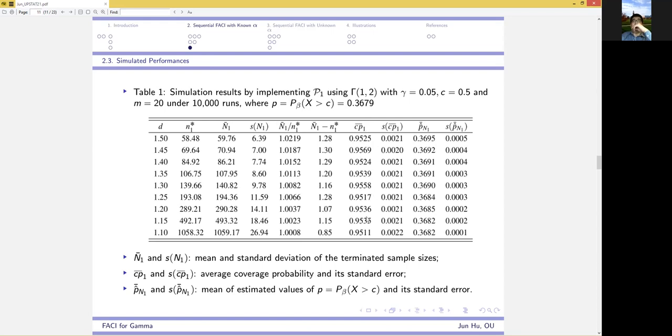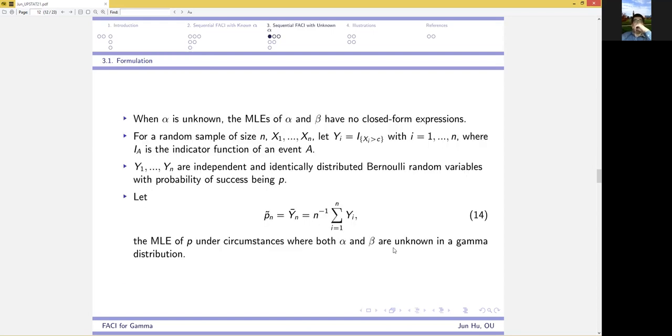Next, in the situation where alpha is unknown, then the MLEs of alpha and beta have no closed form. To overcome this difficulty, we define yi to be the indicator of xi greater than c, so that yis are iid Bernoulli random variables with probability of success p. In this way, the sample mean of yis serves as the MLE of p.